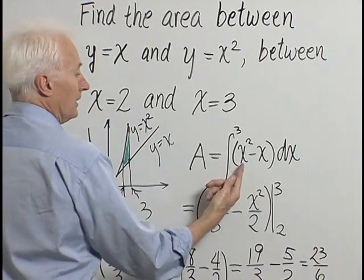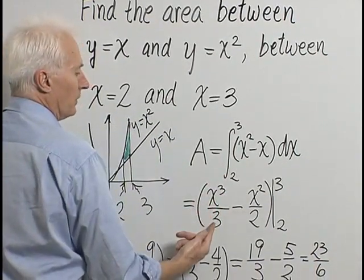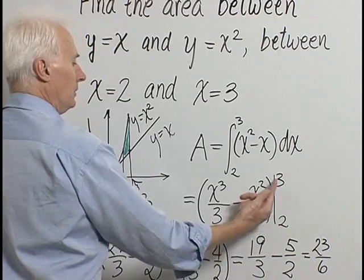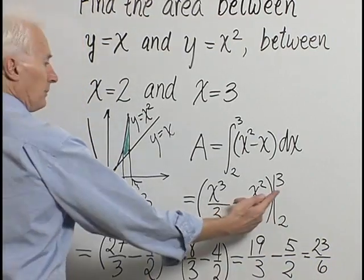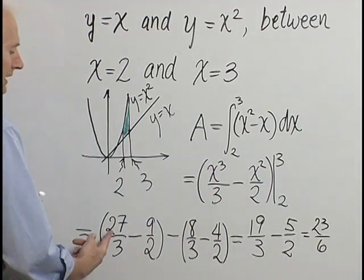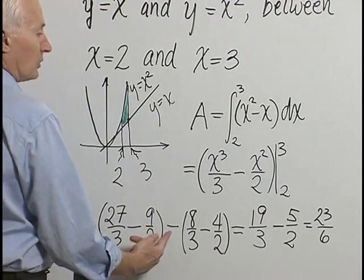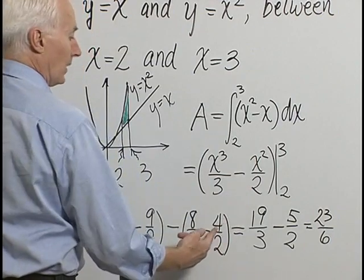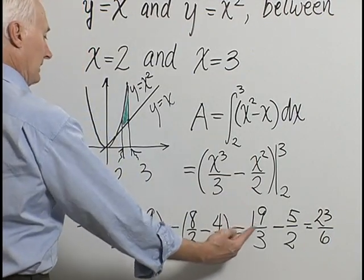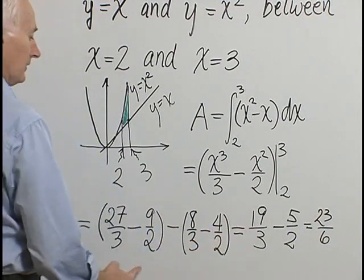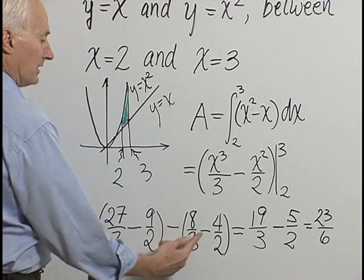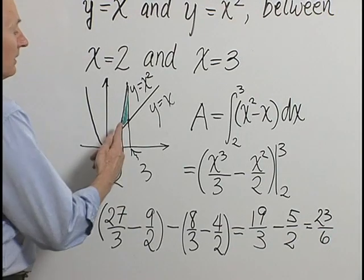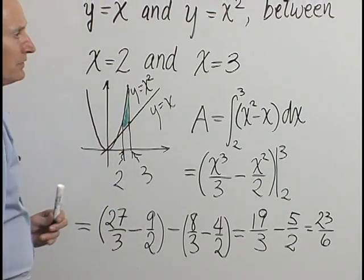The area shown in blue-green between these two curves is the definite integral from 2 to 3 of x squared minus x dx. That's easy to do. The antiderivative of x squared is x cubed over 3, minus the antiderivative of x which is x squared over 2, evaluated from 2 to 3. Putting in the upper limit 3 gives 27 thirds minus 9 halves, and subtracting what we get from x equals 2 gives 8 thirds minus 4 halves. That's 19 thirds minus 5 halves, which equals 23 sixths.